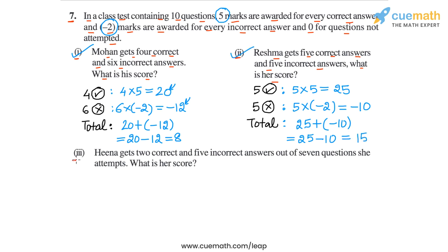Then we come to part 3, which says Hina gets 2 correct and 5 incorrect answers out of 7 questions she attempts. What is her score? Out of 7 questions attempted — the total test had 10 questions — she attempted only 7, so she did not attempt 3 questions. Of the 7 she attempted, she got 2 correct and 5 incorrect. Let's find out Hina's score.